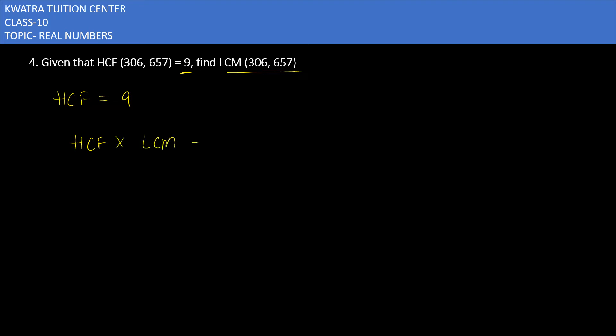HCF times LCM equals the product of two numbers. HCF's value is 9, LCM you don't know. Product of two numbers means you have to take the product of the two numbers, which are 306 and 657.